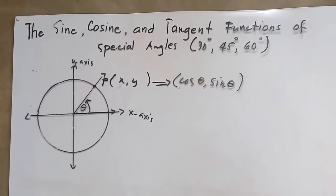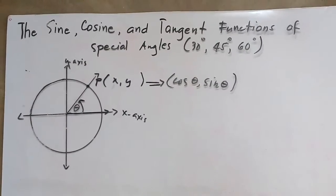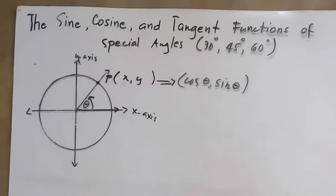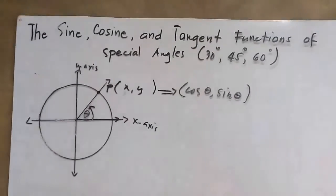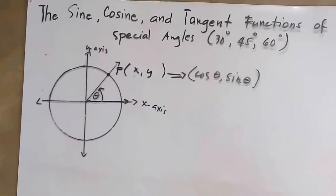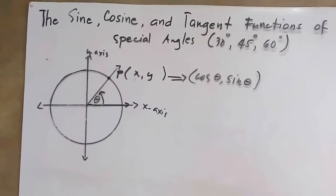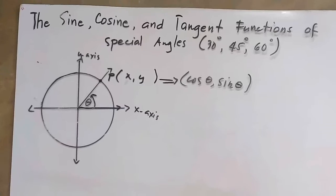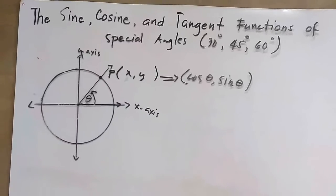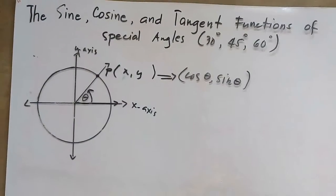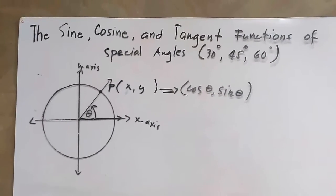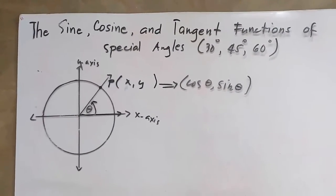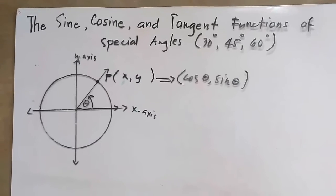This video presents the sine, cosine, and tangent functions of special angles: 30 degrees, 45 degrees, and 60 degrees. Let us first define sine, cosine, and tangent functions.